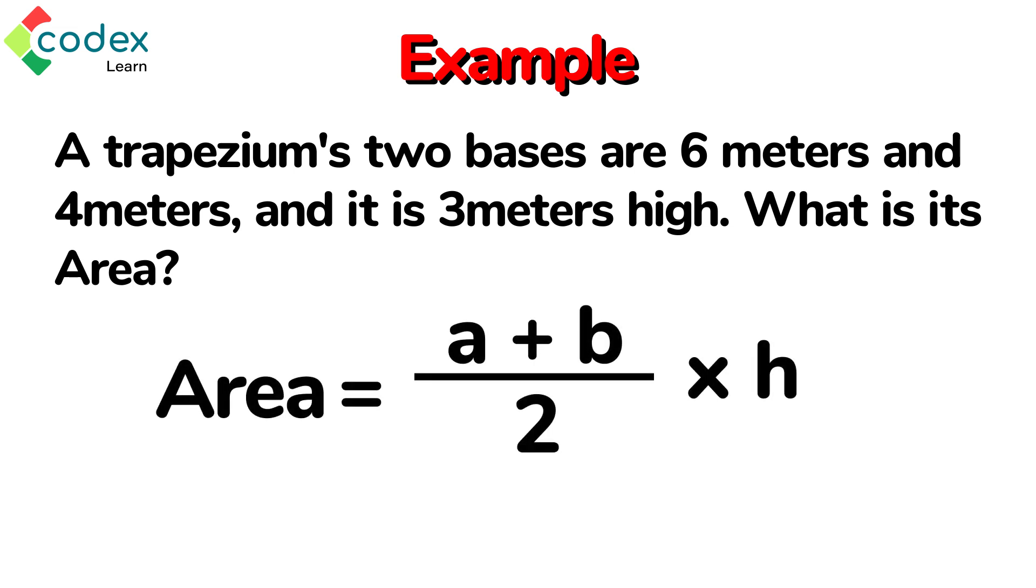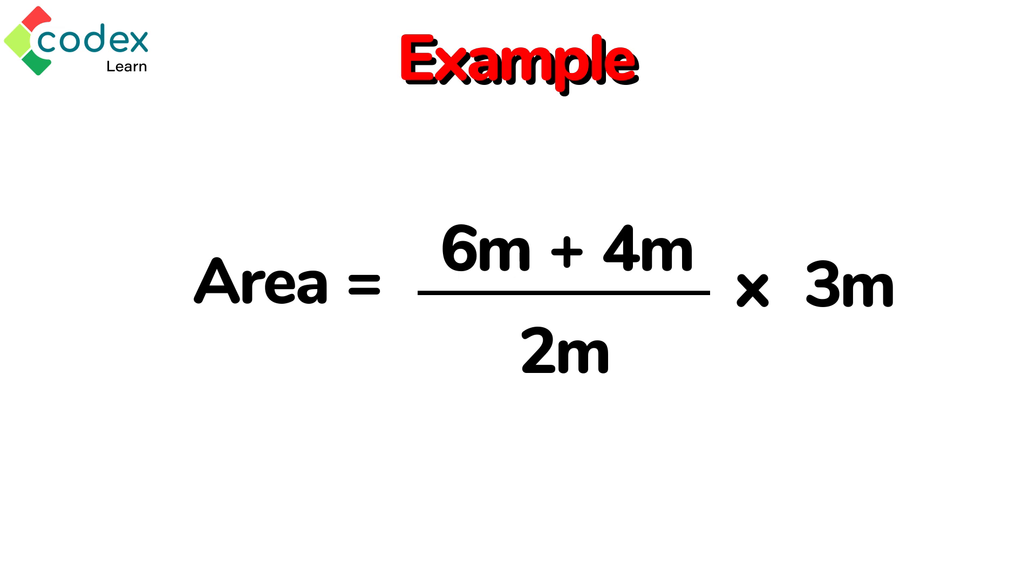Let's recall the formula for finding the area of a trapezium. From the question, a is given as 6 meters, b is 4 meters, and the height h is 3 meters. The area equals 6 meters plus 4 meters divided by 2, all multiplied by 3 meters.